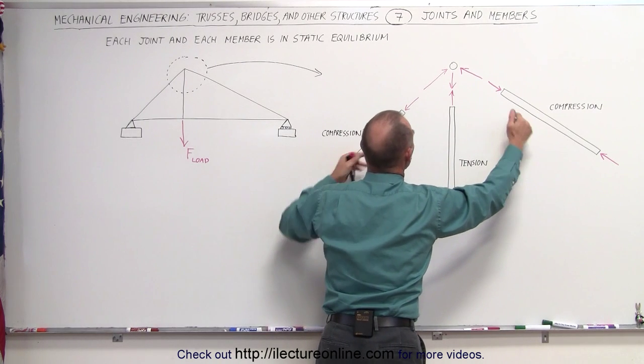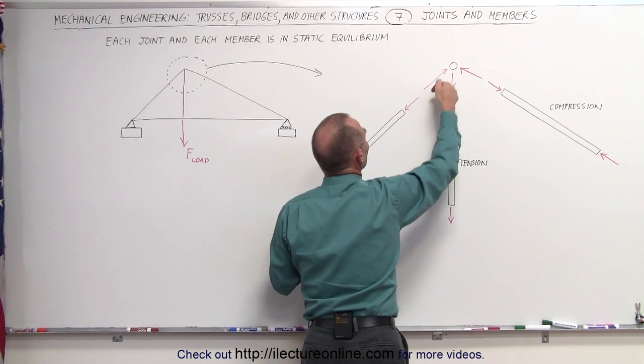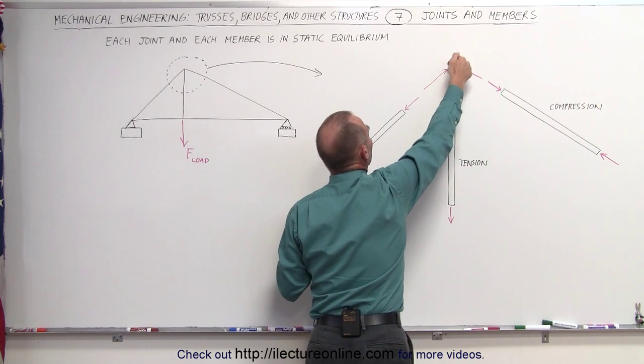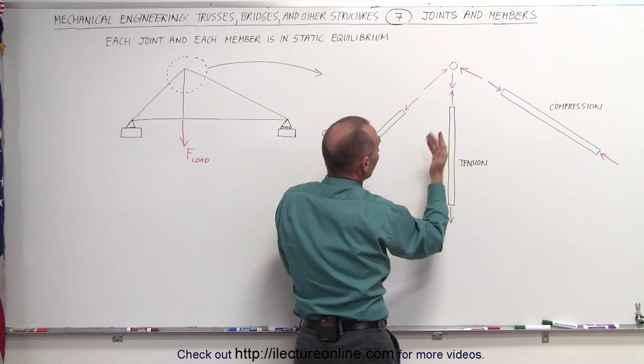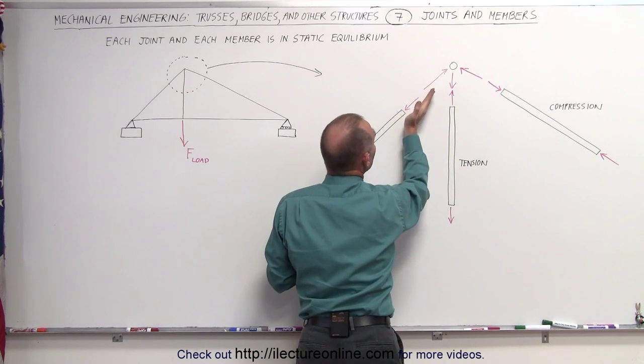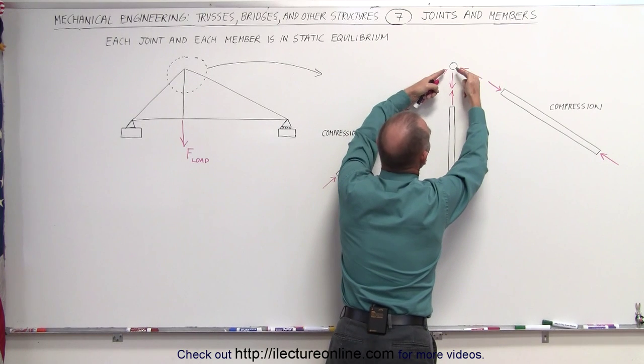The same when they're under compression. When two beams are under compression, as they are in this particular case, you can see that this joint is pushing against the beam, and then the beam is pushing back. Newton's third law: the beam is pushing back with an equal and opposite force in the opposite direction, and that is how the joint stays in place.